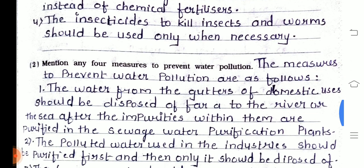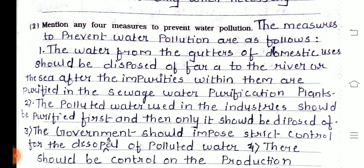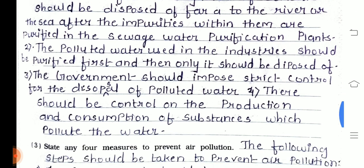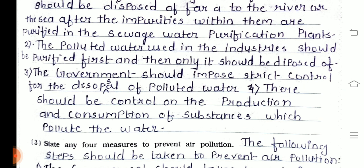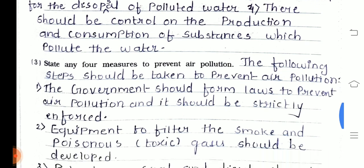Question number two — mention any four measures to prevent water pollution. First, water from the gutters of domestic use should be disposed far from rivers or the sea after impurities are purified in water purification plants. Second, polluted water reused in industry should be purified first before disposal. Third, the government should impose strict controls for disposal of polluted water. Fourth, there should be control on production and consumption of substances which pollute water.